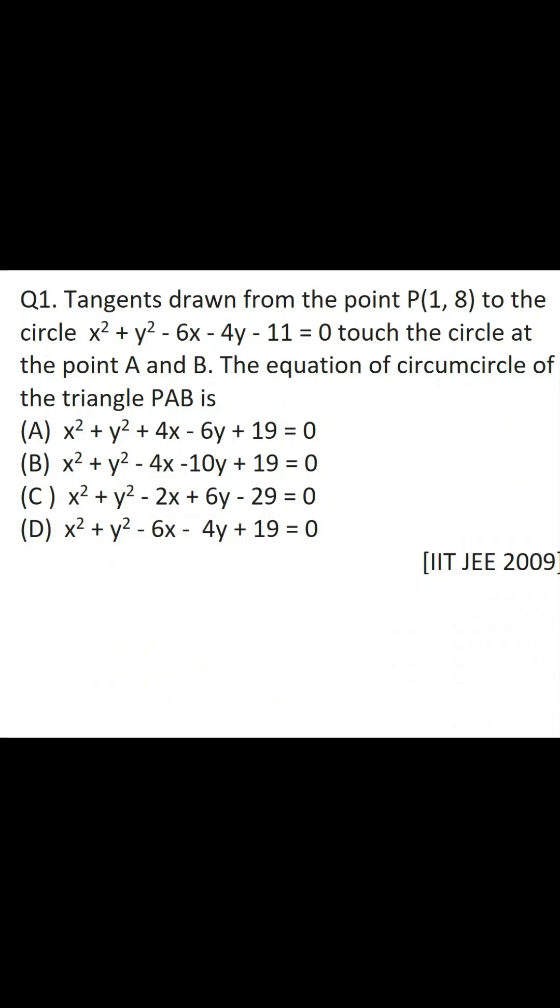Hello students, here the question is from IIT JEE 2009 which says tangents are drawn from the point to the circle given, which touch the circle at the points A and B. Then find the equation of the circumcircle of the triangle PAB, where P is the given point.